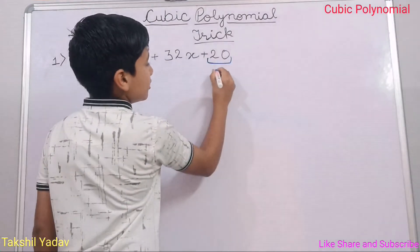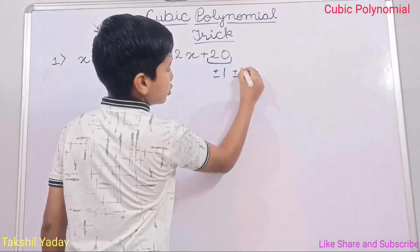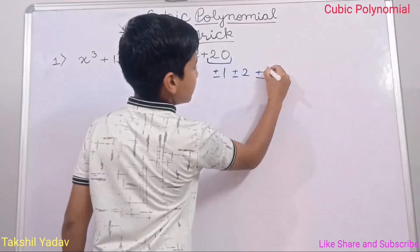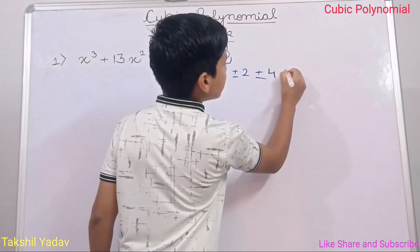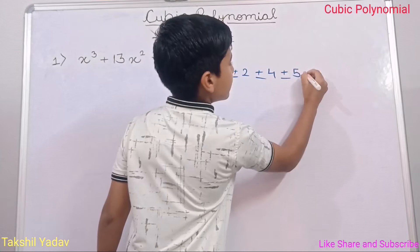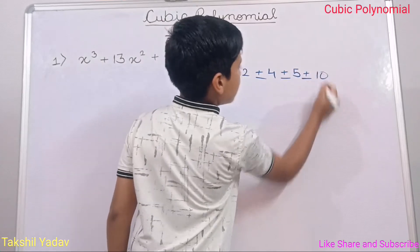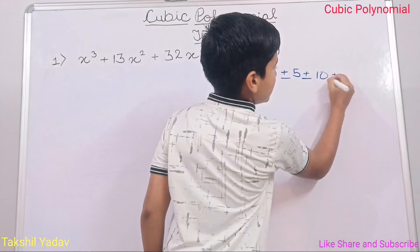Well they are plus minus 1, plus minus 2, plus minus 3, plus minus 4, plus minus 5, plus minus 10, and plus minus 20.